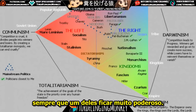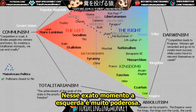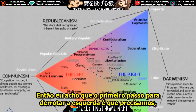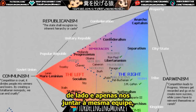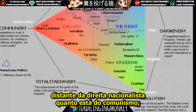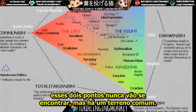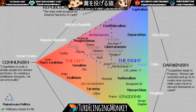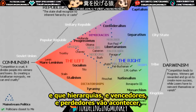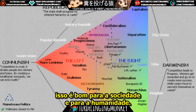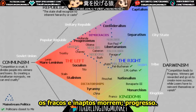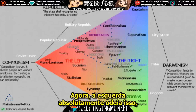Right now the left is too powerful, and the reason is that the right is divided. Step one to defeating the left is not to put our differences aside and join the same team — that's not going to happen. But there is common ground: we can agree about Darwinism. We can agree that hierarchies, winners, and losers are going to happen, and that this is ultimately good for society. That's how evolution works — the strong and fit reproduce, the weak and unfit die. Progress.